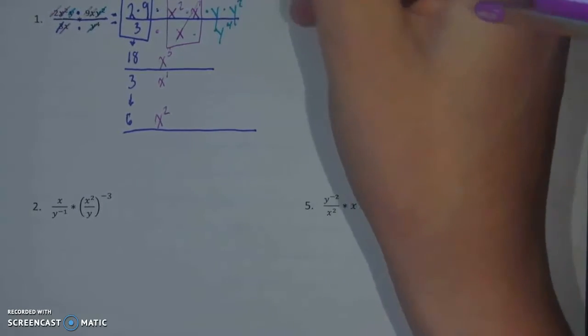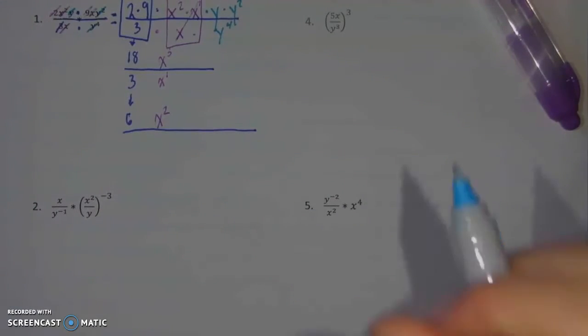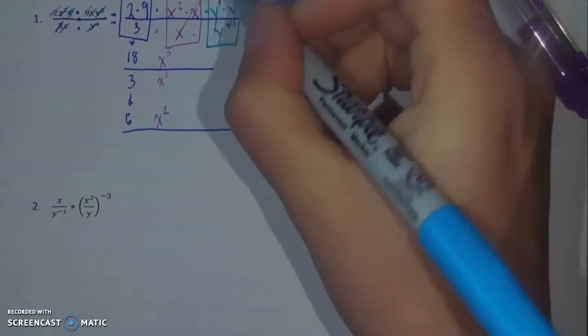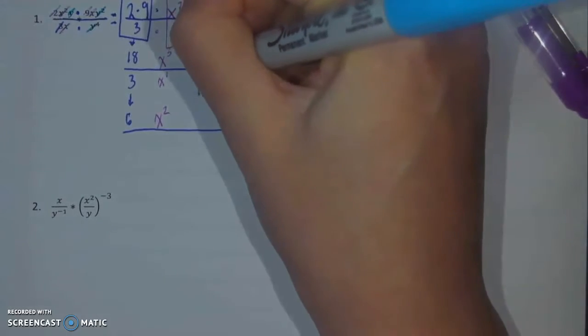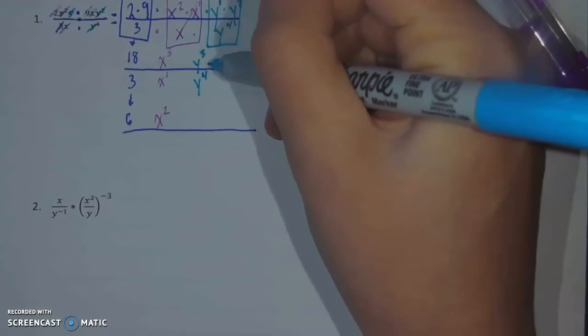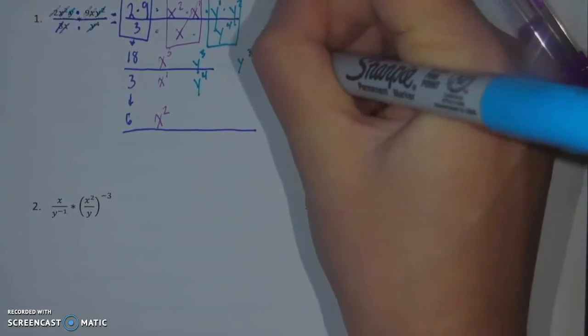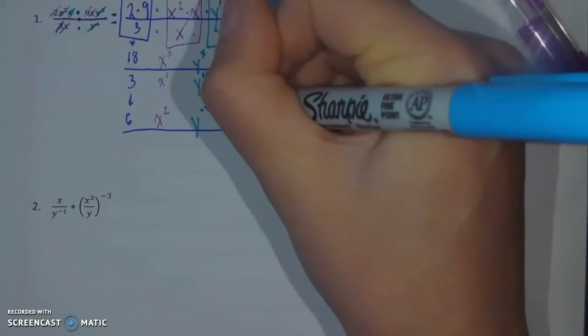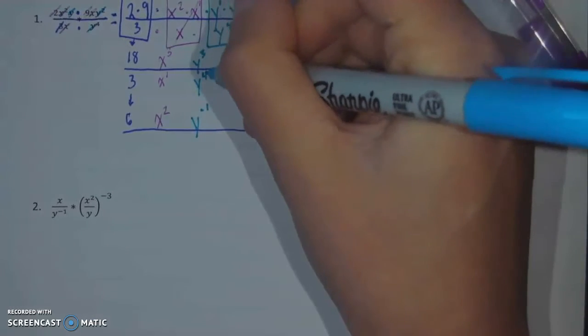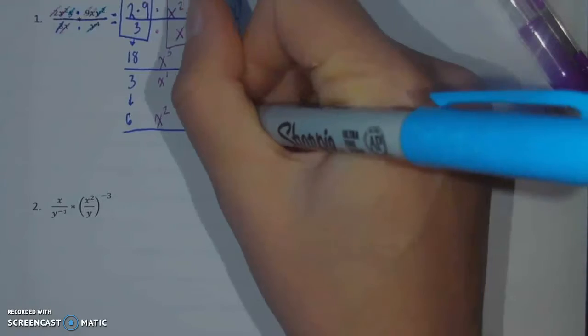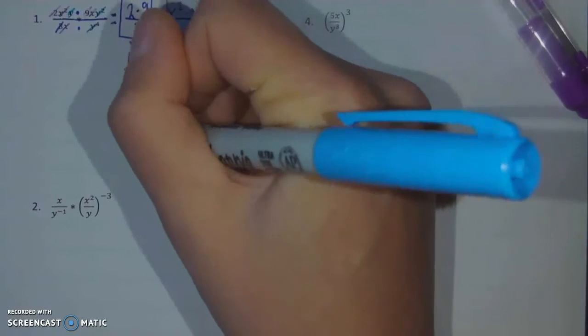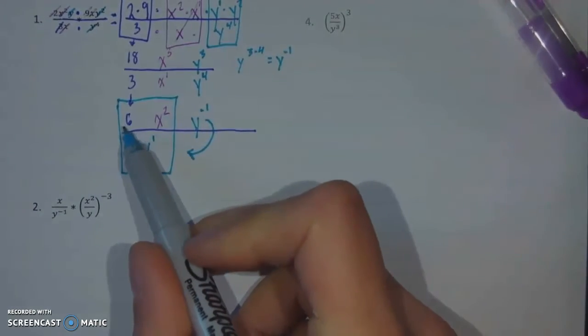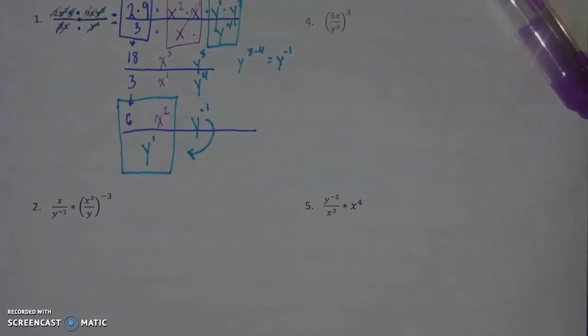And last but not least, I end up with this one where I have y times y squared over y to the fourth. Well, I'm going to combine what's on top first to get y to the first times y squared, which is y to the third. And my y to the fourth is in the bottom. Now, I know that then I can subtract these two. And y to the three minus four is equal to y to the negative one. So what I'm left with is y to the negative one. And that is currently up in the top because whatever you subtract will end up up in the top. But this negative sends it down to the bottom. So I end up with y to the first or just y down in the bottom of my fraction. And that leaves me with the final answer of six times x squared over y to the first. And I would be done.